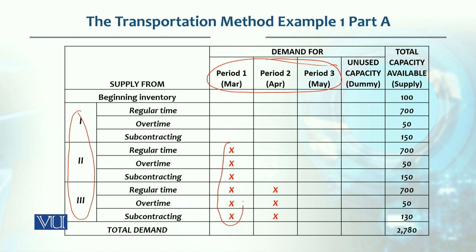यह red crosses लगे हुए हैं — ये indicate कर रहे हैं कि second period की जो production है, यह तीनों options — यह जो production है, यह first period की demand को नहीं meet कर सकती। Back order नहीं है, तो हम नहीं कर सकते। यह possible नहीं है कि second period में production करें और first period की demand को meet करें।